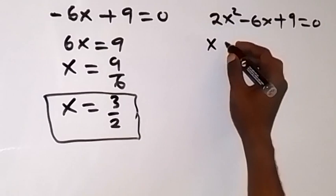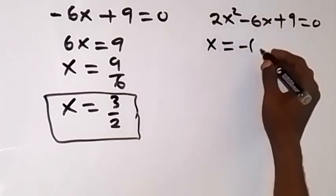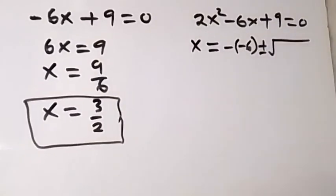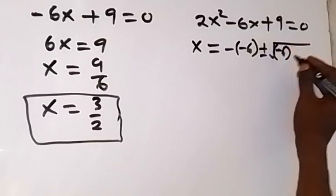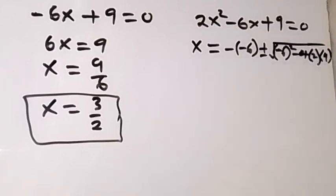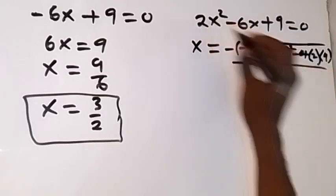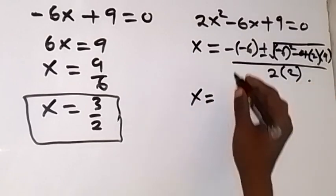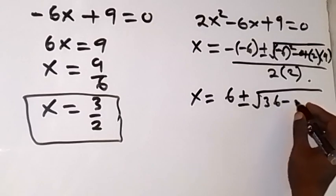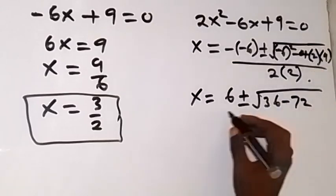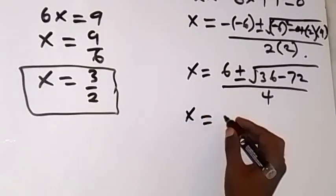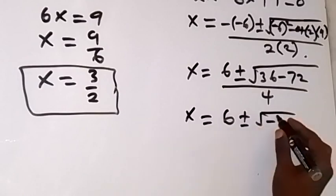Now let's check the other factor: 2x squared minus 6x plus 9 equals 0. Using the quadratic formula, x equals negative b, where b is minus 6, so plus 6, plus or minus the square root of b squared minus 4ac, all over 2a. Here b squared is 36, minus 4 times 2 times 9 gives 72, all over 4. This gives x equals 6 plus or minus the square root of 36 minus 72 over 4, which is the square root of minus 36 over 4.